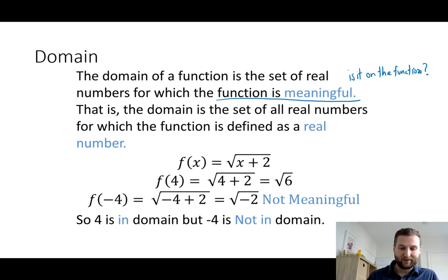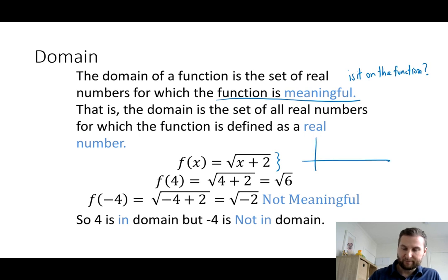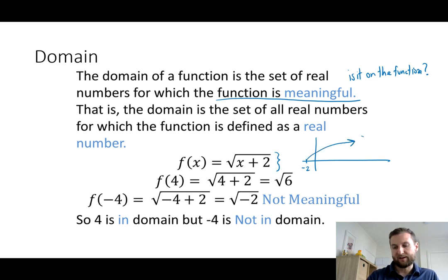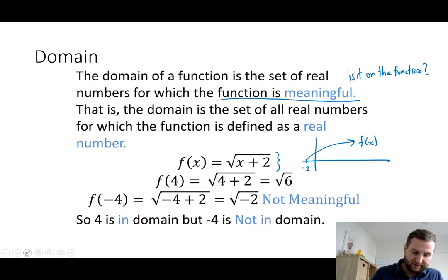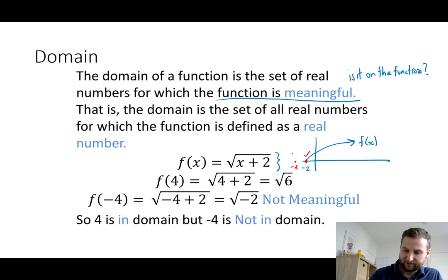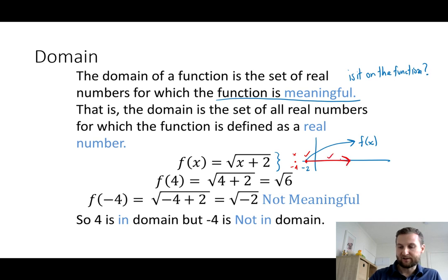We have an example: square root of x plus 2. A quick sketch shows that this is a shift of √x, moving 2 units to the left, starting at x = -2. The domain asks what X values are allowed on this graph — x = -2 gets a tick, x = -4 is not in the function, so that's excluded.